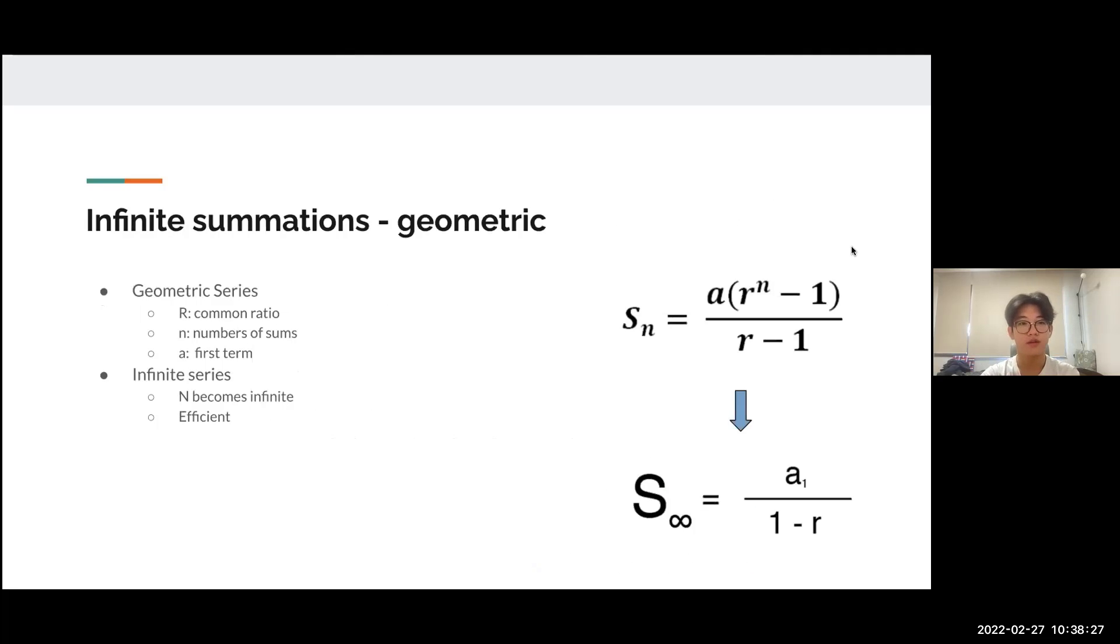Next, I'm going to talk about infinite geometric summation. Before discussing infinite series, I'll cover basic geometric series. R represents the common ratio, N is the number of terms, and a is the first term. For example, if you have a series like 2, 4, 8, 16, 32, 64, then it's a geometric series. The first term is 2, the number of terms is 5 or 6, and the common ratio is 2 because it's doubling the numbers.